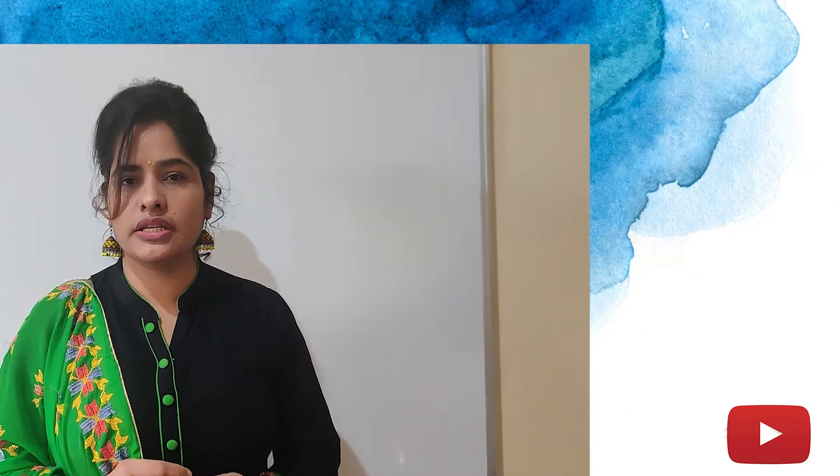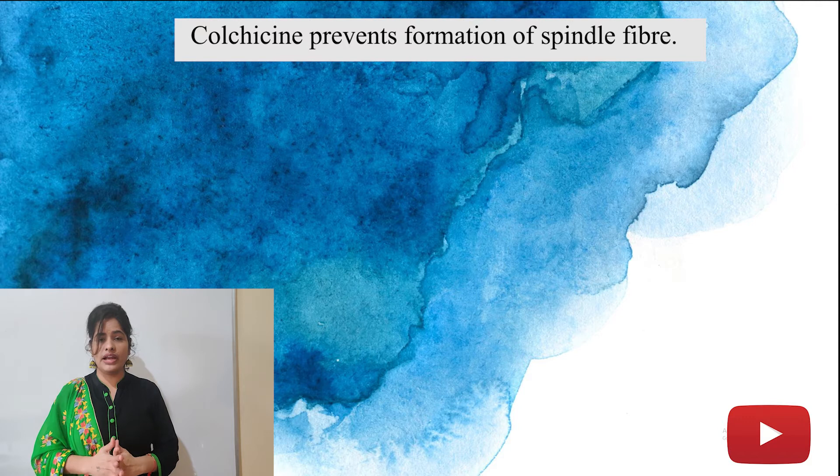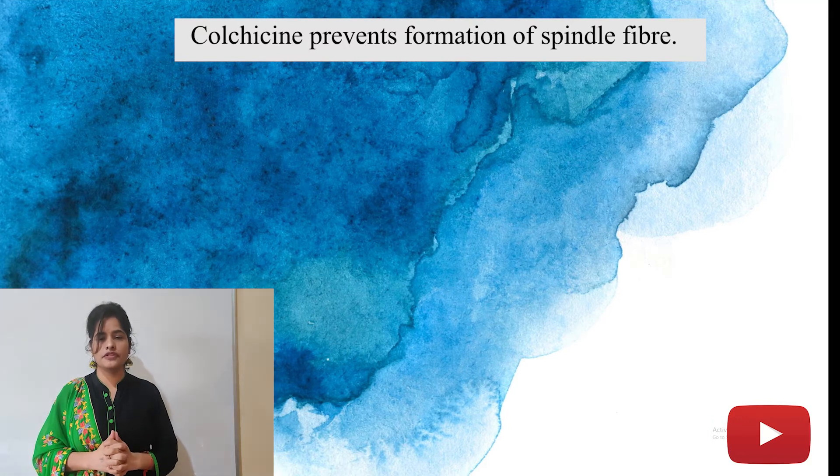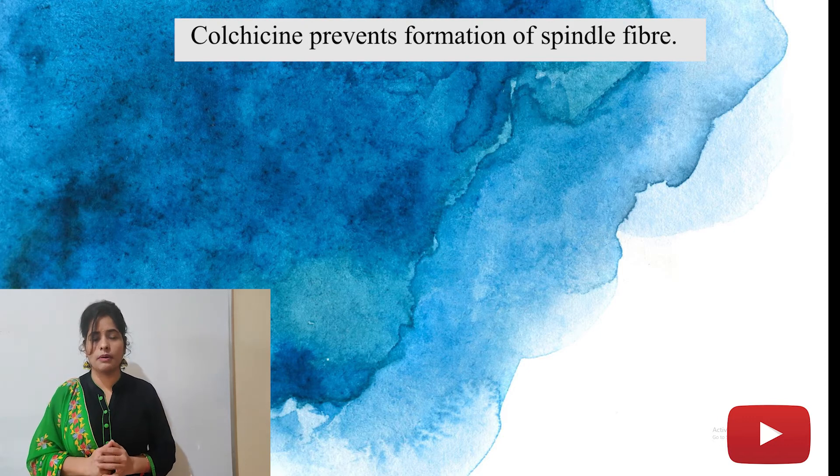What is the mechanism? Okay, colchicine kis tariqe se mitotic division ko stop kerta hai. Colchicine prevents the formation of spindle fibers. Question hi aata hai ki spindle fiber formation toh rohk raha hai. But how?